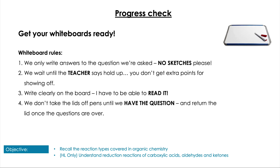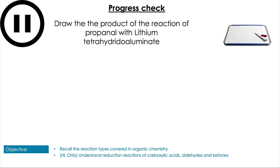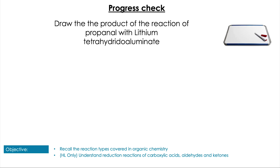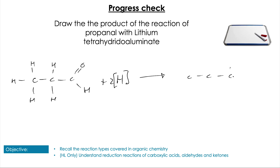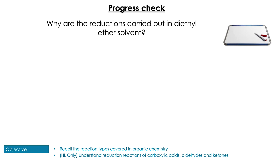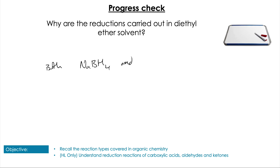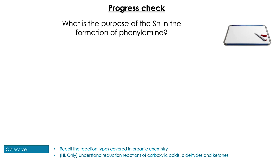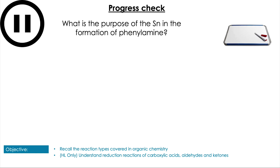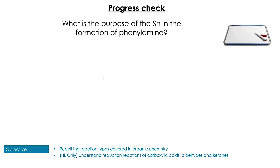Before we look at more reaction pathways, time for a couple of questions. First: draw the product of propanal with lithium tetrahydroaluminate. We do the inverse of our oxidation reaction and form our primary alcohol — propan-1-ol. Next: why are reductions carried out in diethyl ether? Because diethyl ether is a dry solvent and both reducing agents react violently with water and alcohols. Finally: why is tin used in the formation of phenylamine? Because it is a reduction reaction and tin provides the electrons.